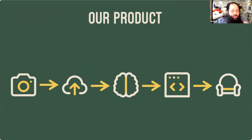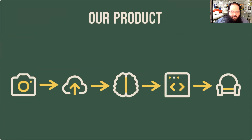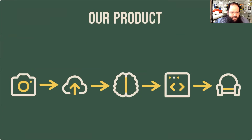Our use case isn't quite the normal one for Dagster, so a quick overview of our main product. A user takes a bunch of imagery of their room using our mobile app, uploads those to our cloud, we run a bunch of fancy maps, build a 3D view of their room, and then they can drag virtual furniture in to see how it would look before buying. It's directly customer facing, so we need it to run quickly.